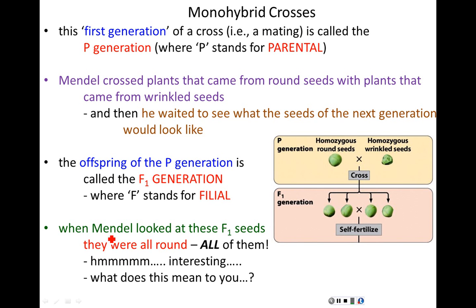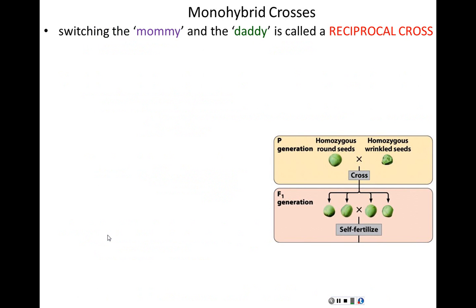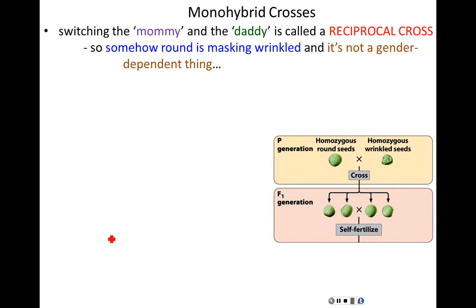All of them were round. What did just happen? One plant had round seeds and one plant had wrinkled seeds, and all the kids looked like the round parent — exclusively, not wrinkled in the slightest. Mendel wondered if the male plant was dominant — a stereotypical assumption of his day. So he switched: he made the father have the wrinkled seeds and the mother have the round seeds. The results were the same — everything was round. That's called a reciprocal cross. So it was independent of the gender of the parent's plant. Somehow, regardless of who had the trait, round was masking wrinkled.